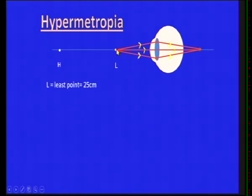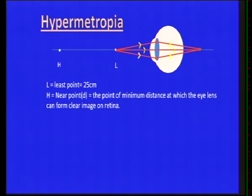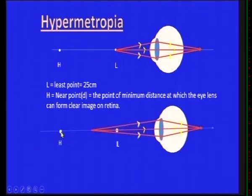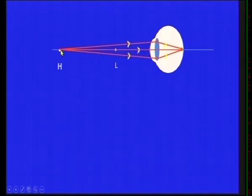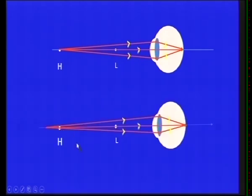Here L is the least distance (25 centimeters) and H is the near point — the minimum distance at which the eye lens can form a clear image on the retina. If you place an object before this near point, you cannot see it clearly. When the object is placed between the near point and least distance, the image forms behind the retina. When the object is placed at the near point or beyond, you can see it clearly.